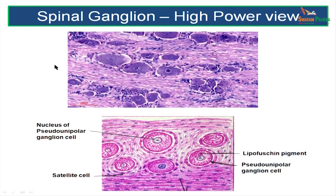On a high-power view of the spinal ganglion, each nerve cell has a large oval or round shape with a central spherical nucleus and a very well-defined layer of satellite cells. The satellite cells are the supportive neuroglial cells of the peripheral nervous system. In an illustration, you can see a large ganglion cell of a pseudo-unipolar ganglion with a centrally placed nucleus and a well-developed layer of satellite cells forming a capsule around the ganglion cell, with many nerve fibers between the ganglion cells.